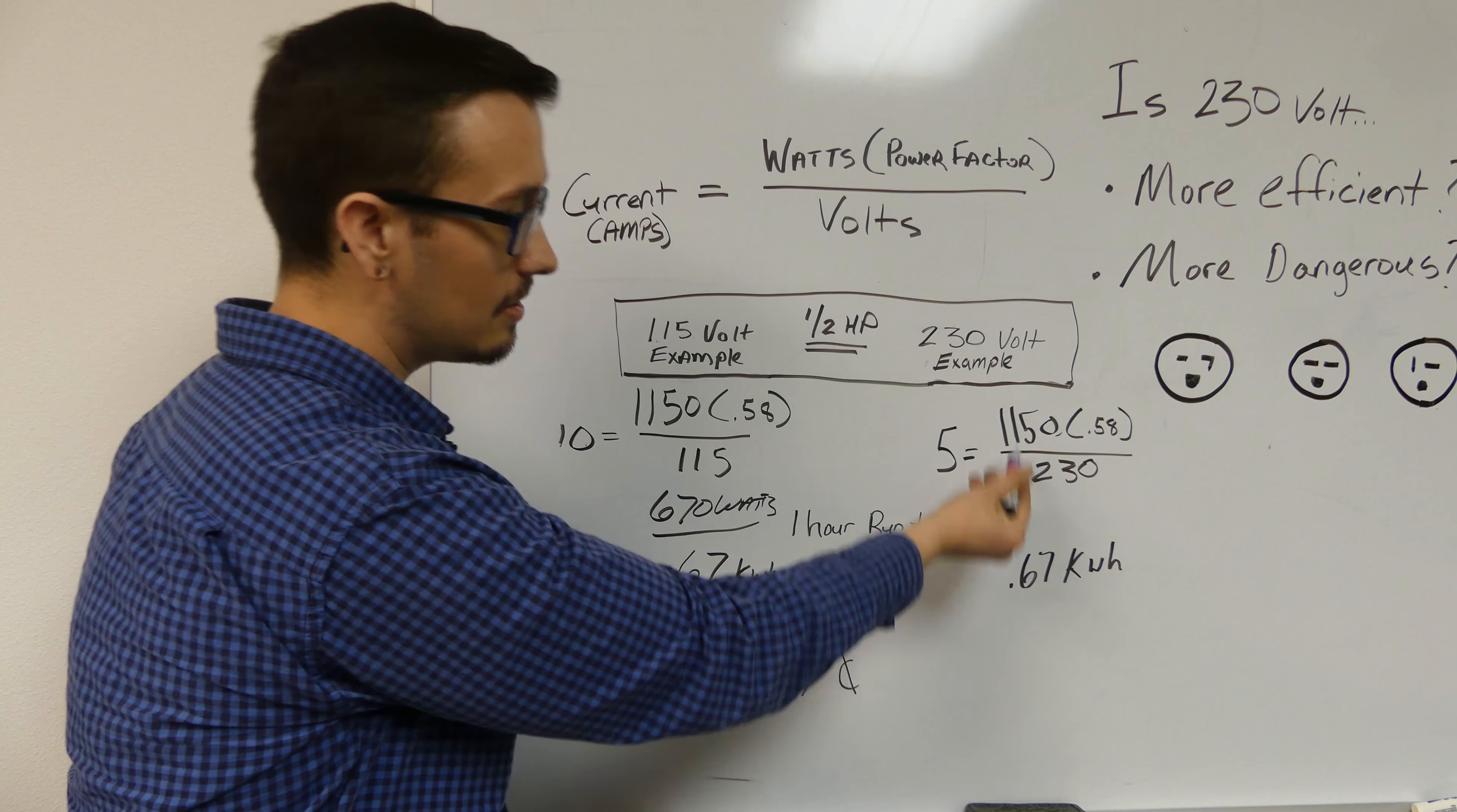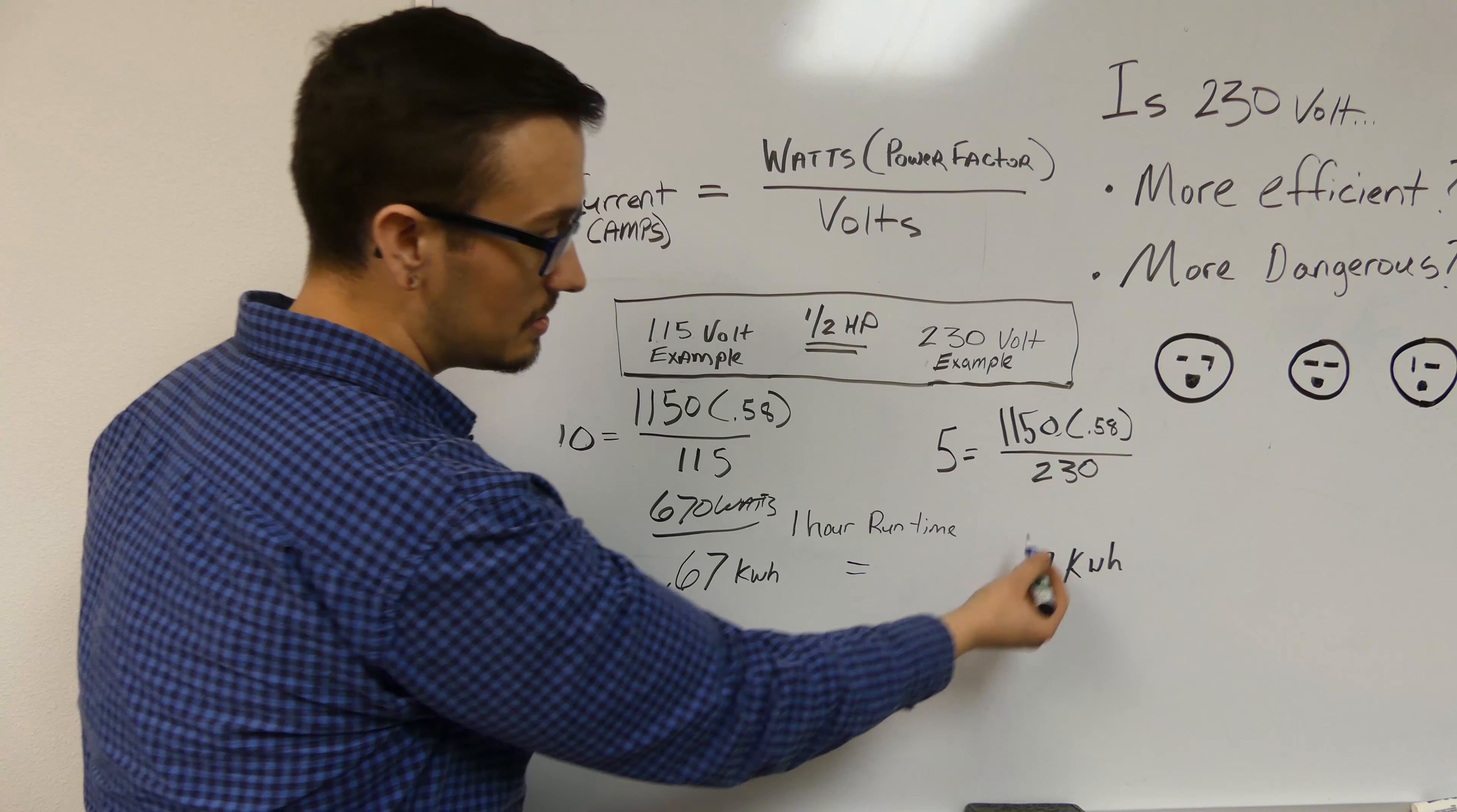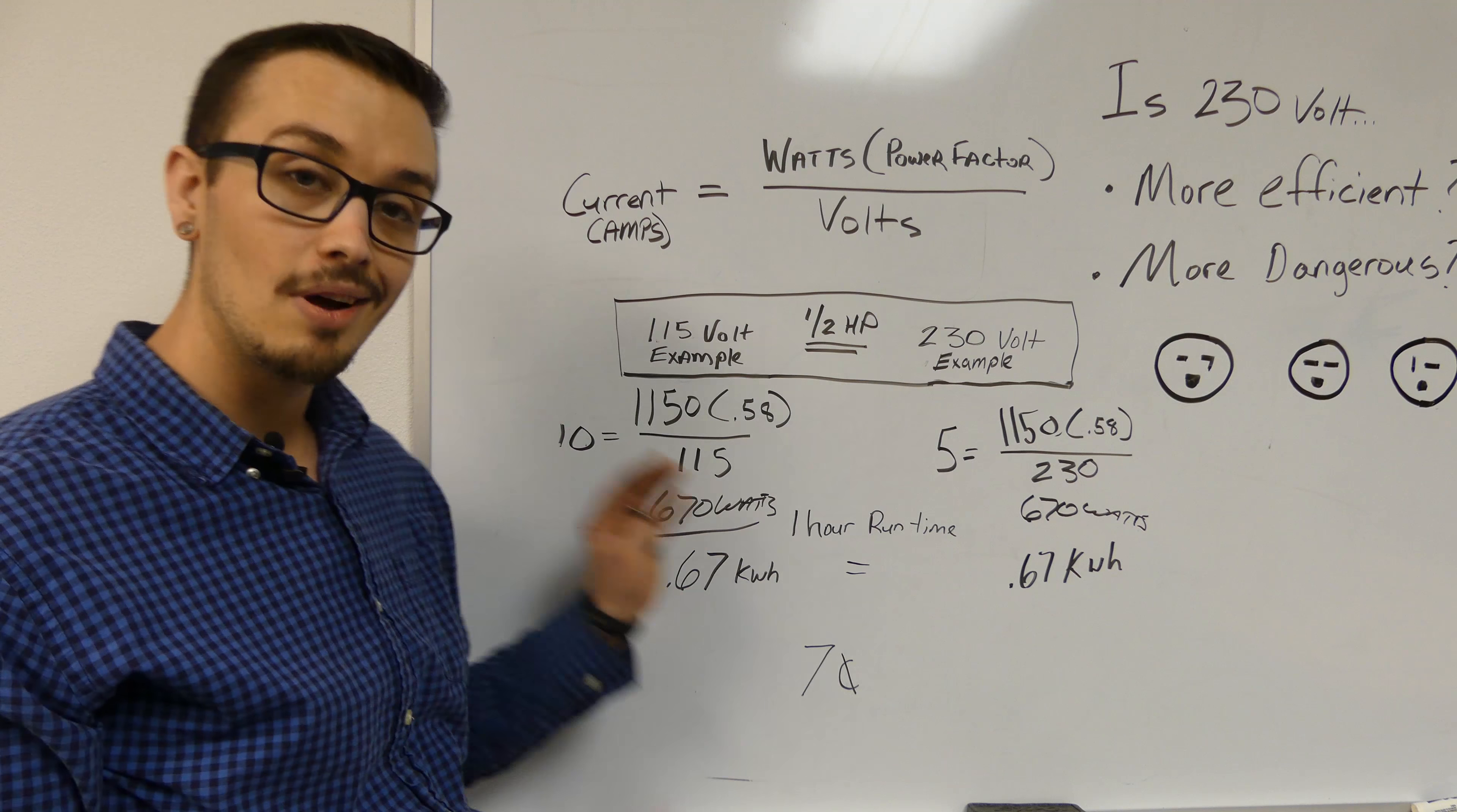Now we run through this whole situation at 230 volt. Five times 230 is 1150. 1150 times power factor, which is identical on both of these motors, and we come up with the same figure: 670 watts.